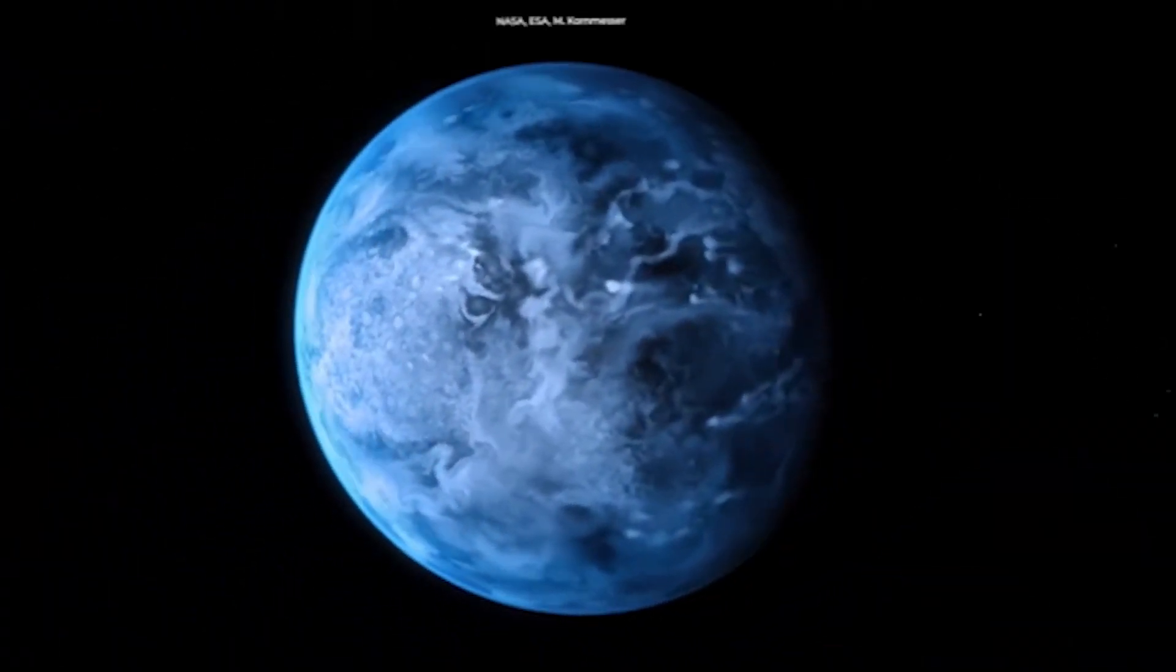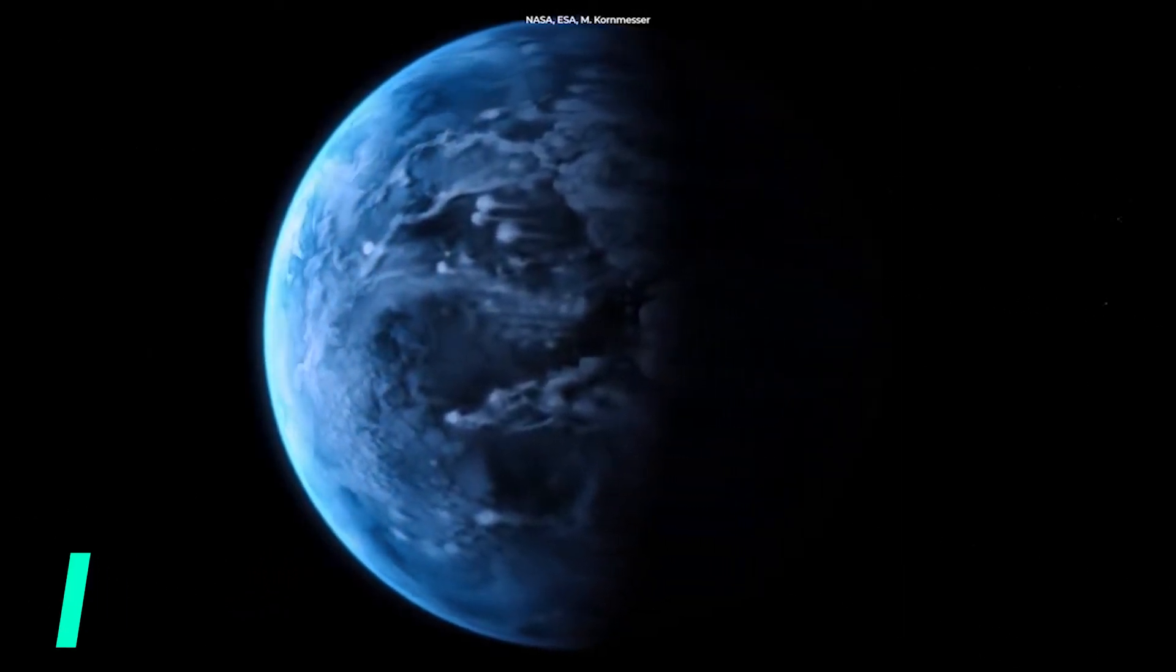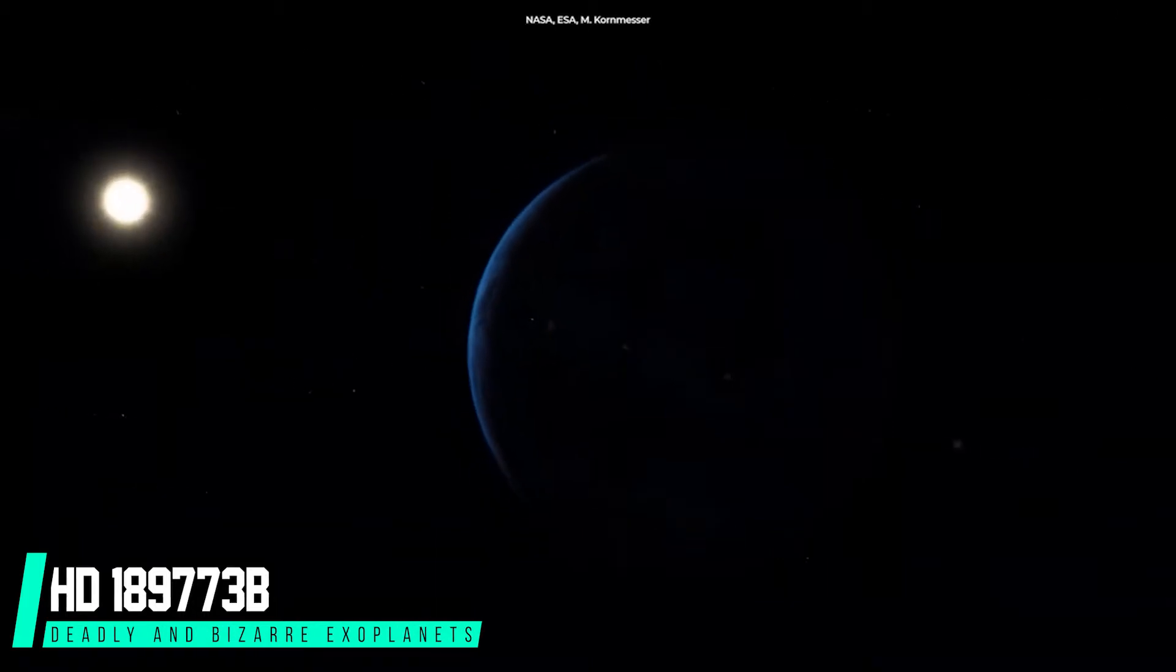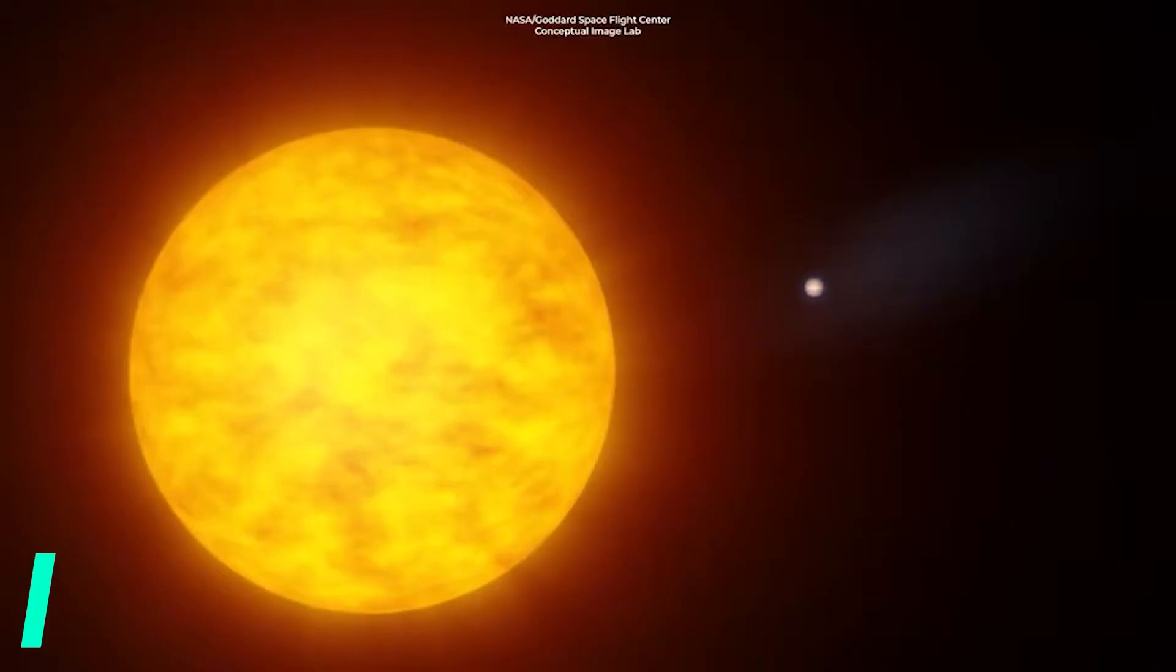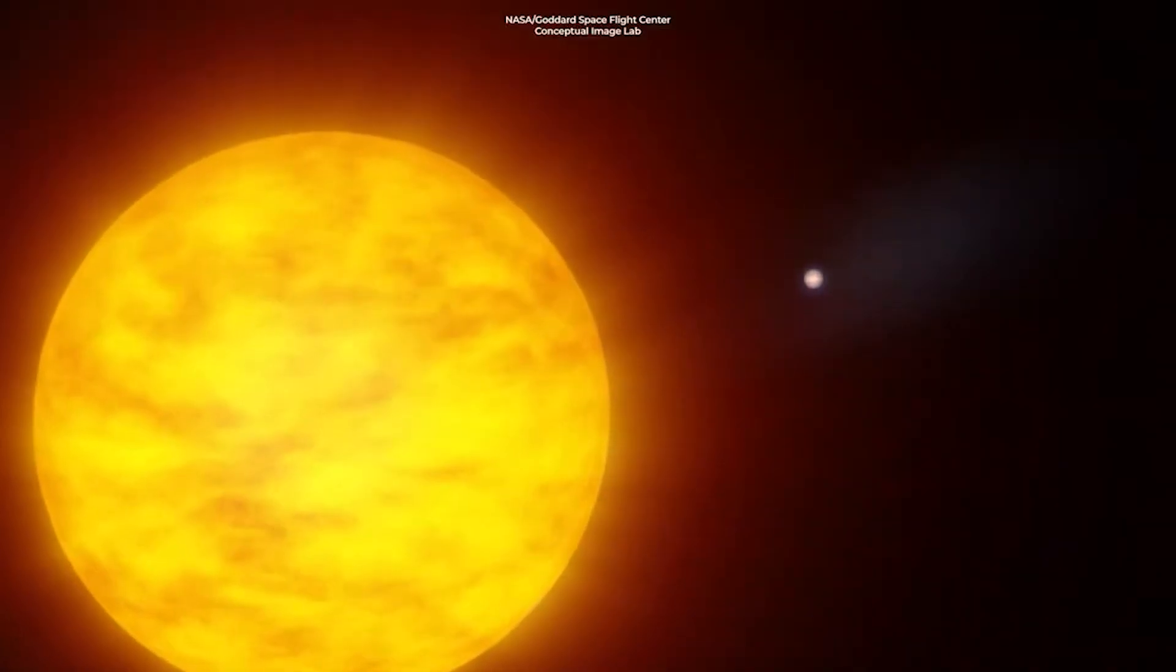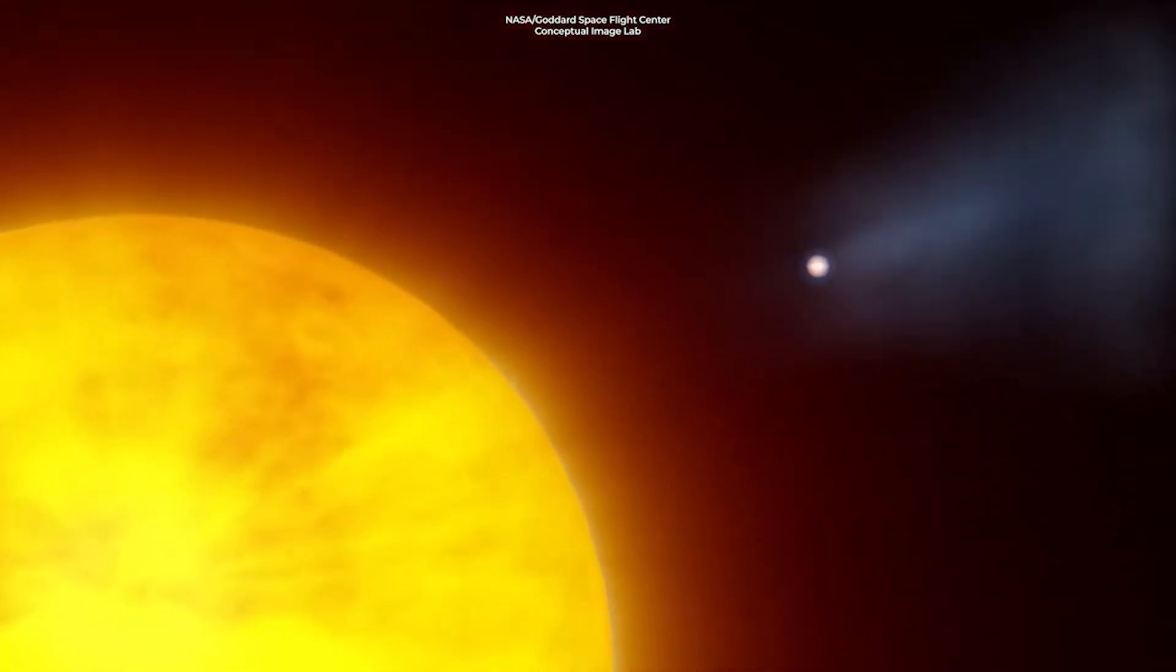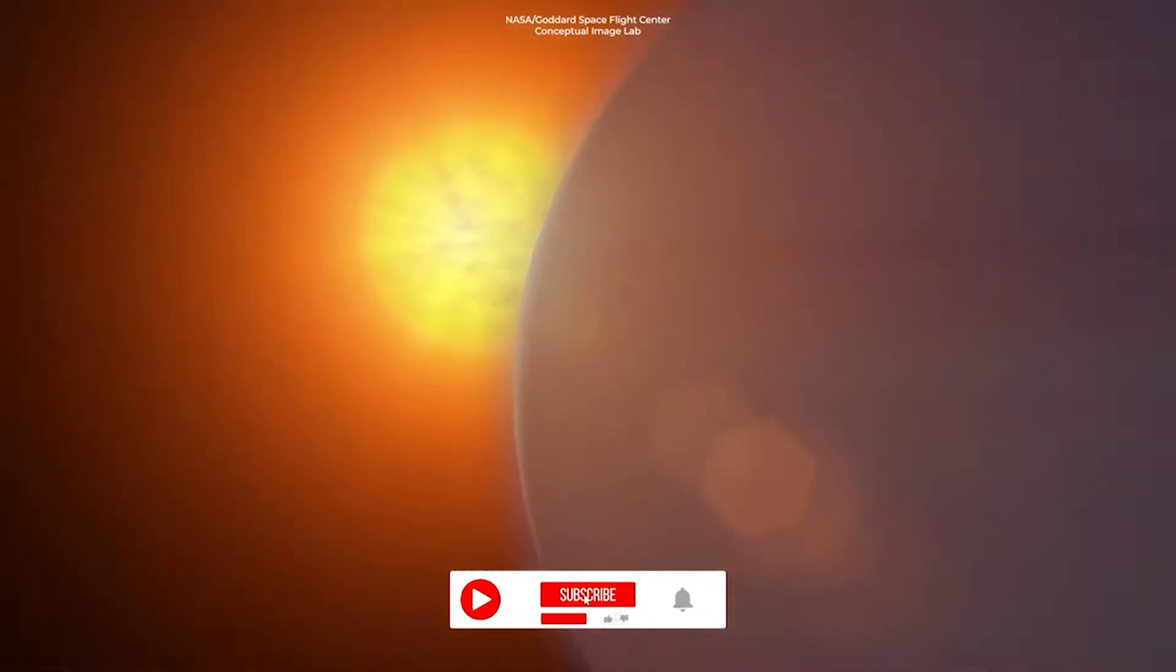Number three. HD 189773b is an exoplanet about the size of Jupiter, and it is 30 times closer to its star than Earth to the Sun. This planet's atmosphere is slowly evaporating away because of the intense X-ray and ultraviolet radiation from its star, losing around 100 million to 600 million kilograms per second.